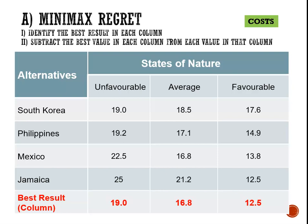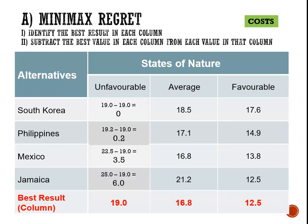Now we move on to step two. We're going to find the absolute difference between each payoff in the column and the best payoff from that column. Starting with the unfavorable column, the best figure is 19 — the lowest cost. We subtract 19 from every payoff: South Korea: 19 minus 19 = 0; Philippines: 19.2 minus 19 = 0.2; Mexico: 22.5 minus 19 = 3.5; Jamaica: 25 minus 19 = 6.